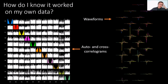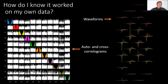That's the essence of template matching, and I've shown some quantifications of how we know the algorithms are doing well or not. We have simulations, hybrid ground truth, and a very few cases of actual real ground truth. Based on those, we can tell how well we're doing, at least approximately. But how do you know it worked on your own data?